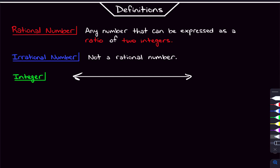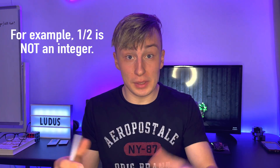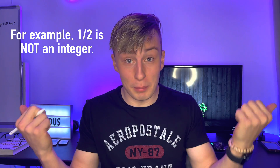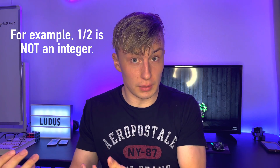An integer is any number that you regularly see on a number line. So it's zero, one, negative one, negative two, two. These are integers and they go in both directions forever, but it's none of the numbers in between. It's just these whole numbers going in both directions.